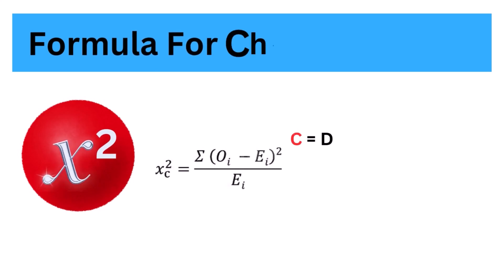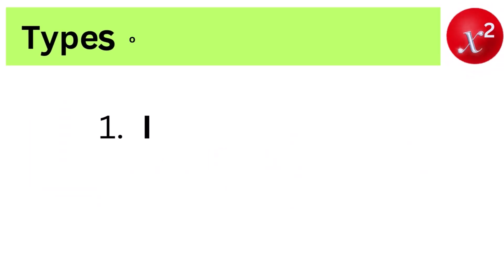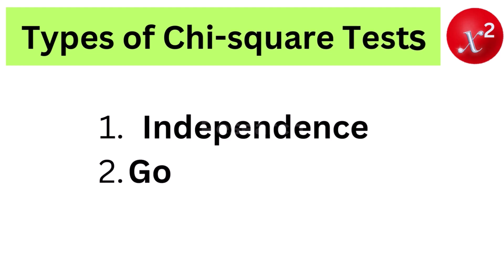Formula for chi-squared test: where C equals degrees of freedom, O equals observed value, E equals expected value. There are two main types of chi-squared tests namely: 1. Independence 2. Goodness of fit.